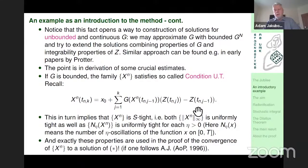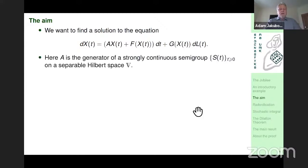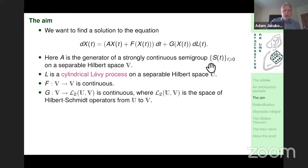Our aim is to find a solution to the equation in a very general form. Here, capital A is the generator of a strongly continuous semigroup on a separable Hilbert space V. The noise L is a cylindrical Lévy process on some other separable Hilbert space U. The function f is continuous, and g is continuous but takes values in the space of Hilbert-Schmidt operators from U to V.